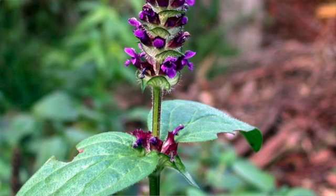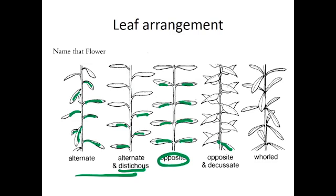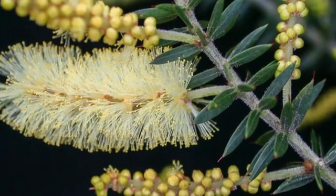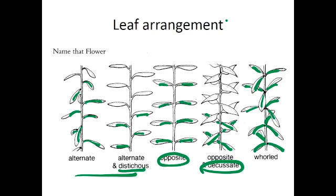If those opposite pairs of leaves are at right angles to the preceding ones, then the arrangement is opposite and decussate. If you have more than three leaves originating at a single point, the leaf arrangement is called whorled. The leaves occur in a whorl around the stem.